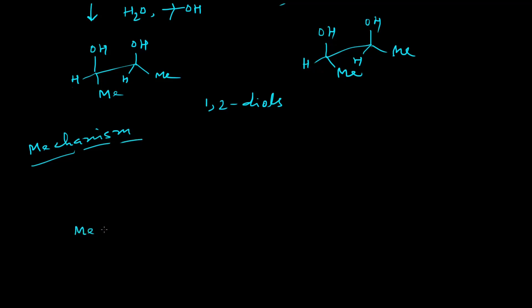Since this alkene is electron rich in nature, these two methyl groups will donate some electron cloud into this pi orbital system, and thereby it will essentially behave as a nucleophile. The oxidants, which are osmium tetroxide and potassium permanganate, will essentially behave as electrophiles during the reaction.